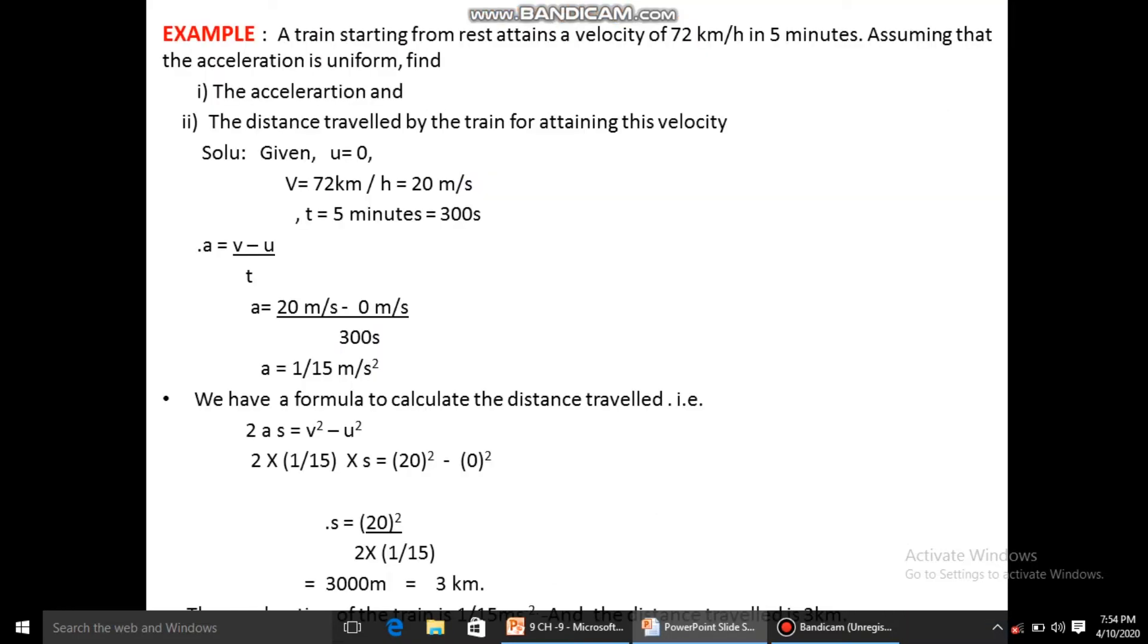Let's take an example: A train starting from rest attains a velocity of 72 km per hour in 5 minutes. Assuming that the acceleration is uniform, we have to find out the acceleration and distance travelled by the train for attaining this velocity.